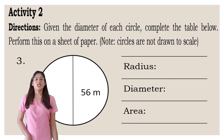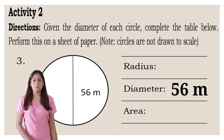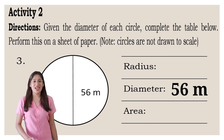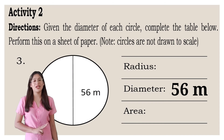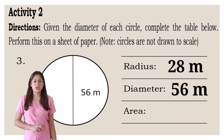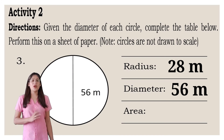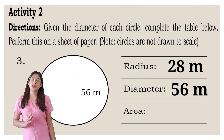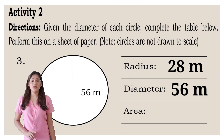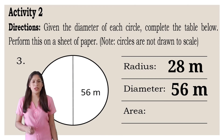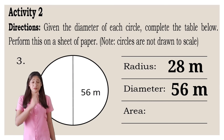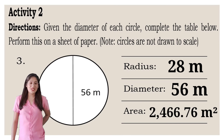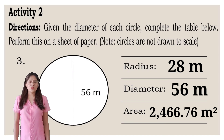Number 3: the given is 56 meters in diameter. We will find the radius by dividing the diameter by 2. So 56 divided by 2, we will get 28 meters. We will find the area using the formula pi r squared. We will substitute pi as 3.14 and then multiply it by 28 meters, and multiply it again by 28 meters. The answer is 2,466.76 meters squared.